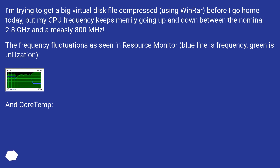The frequency fluctuations as seen in resource monitor: the blue line is frequency, green is utilization, and core temp.